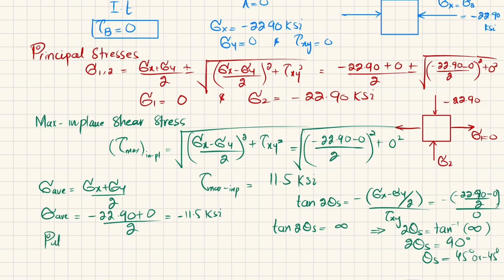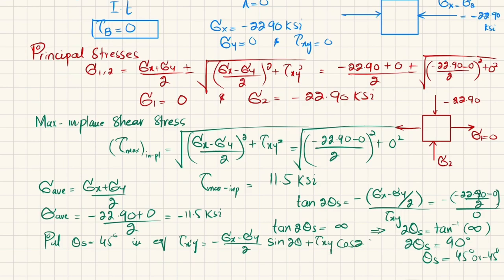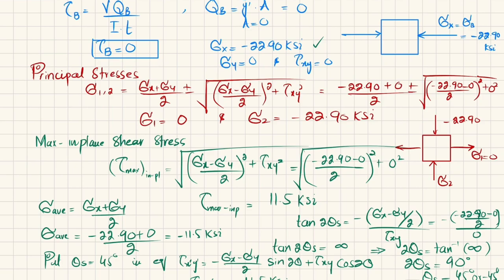To determine the correct direction of theta_s, substitute theta_s equals 45 degrees into the shear stress transformation equation: tau equals minus (sigma_x minus sigma_y) divided by 2 times sin(2θ) plus tau_xy times cos(2θ). With sigma_x equals minus 22.90 and 2θ equals 90 degrees, the result is positive 11.5 ksi, confirming theta_s equals positive 45 degrees.